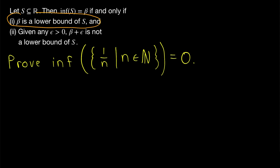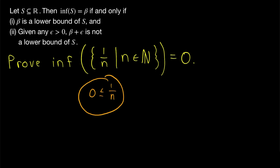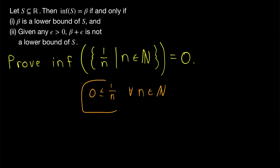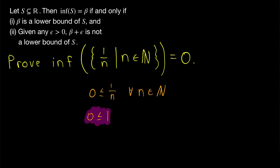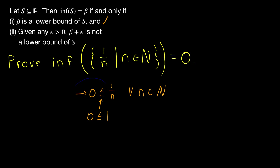First, we need to prove that zero is a lower bound of the set. As is often the case with real analysis proofs, it's helpful to start by writing the inequality we want to prove — that zero is a lower bound of this set — so zero is less than or equal to one over n for every natural number n. If we multiply both sides of this inequality by n, we have that zero times n, which is zero, is less than or equal to one. And this is obviously true. Thus, we can start with this certainly true inequality, then divide both sides by n, and get the inequality we want, proving that zero is a lower bound of our set.